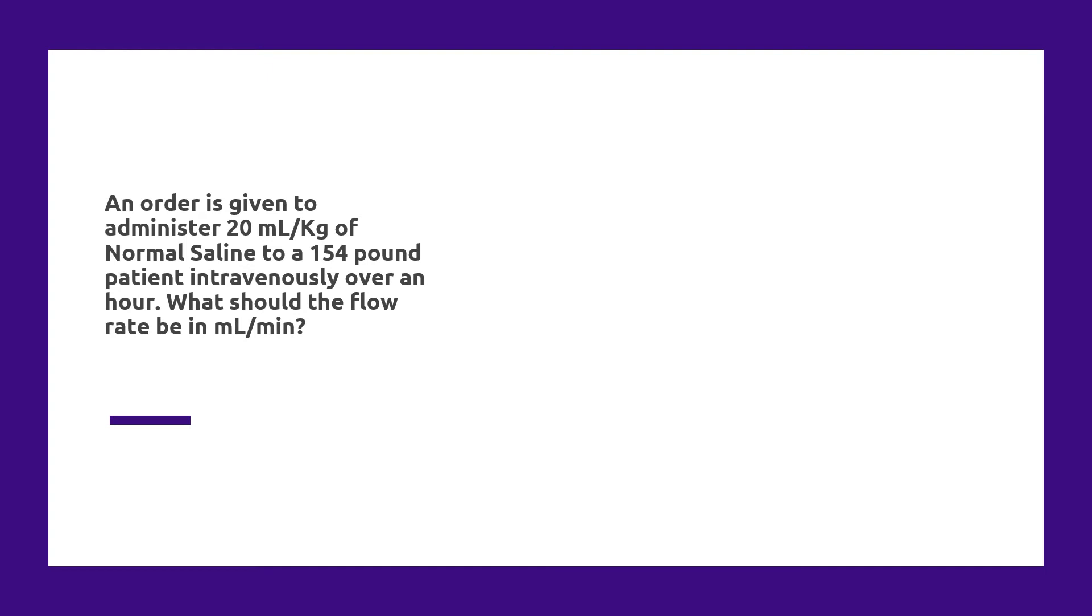So now instead of just giving us the total volume the patient's going to get, we get a weight-based volume. The weight used in the volume is kilograms, but our patient weight is given in pounds, so we're going to have to do some conversions. Ultimately, our answer is going to need to be in milliliters per minute. So the first thing I would do is convert this patient's weight from pounds to kilograms. This is one really important conversion you're going to need to have memorized for the exam: 1 kilogram is equivalent to 2.2 pounds. Definitely commit that to memory. You could do this conversion by setting up a proportion like I always advocate to do, but a simpler way to convert pounds to kilograms is by simply dividing by 2.2. So 154 divided by 2.2 is 70 kilograms.